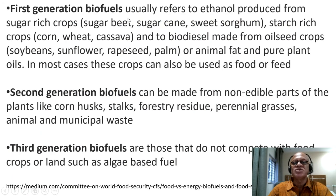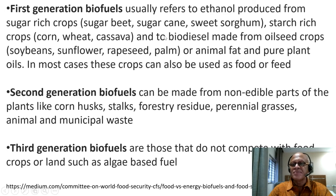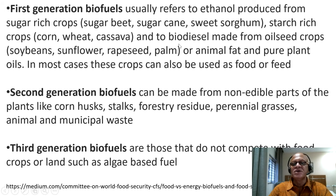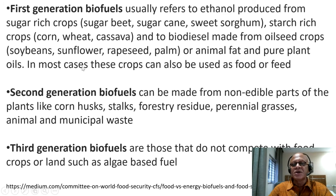First-generation biofuels usually refers to ethanol produced from sugar-rich crops such as sugar beet, sugar cane, and sweet sorghum; starch-rich crops such as corn, wheat, and cassava; and to biodiesel made from oilseed crops like soybean, sunflower, rapeseed, palm, or animal fat and pure plant oils.